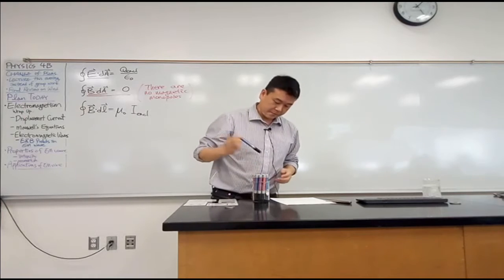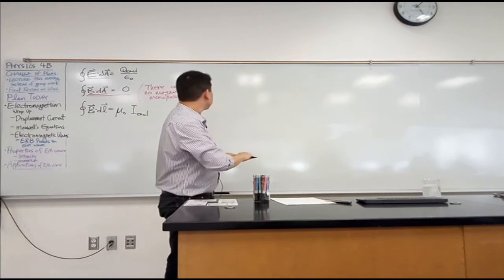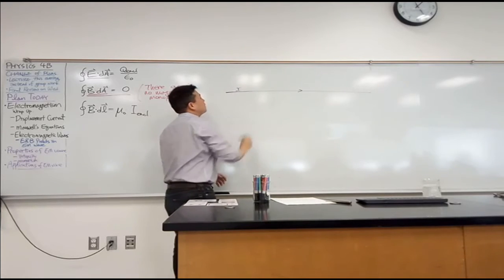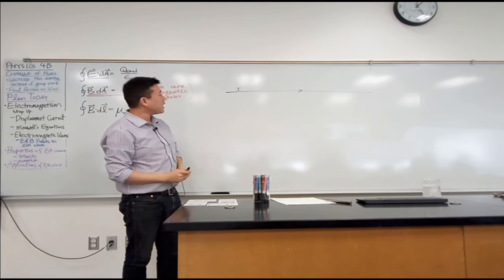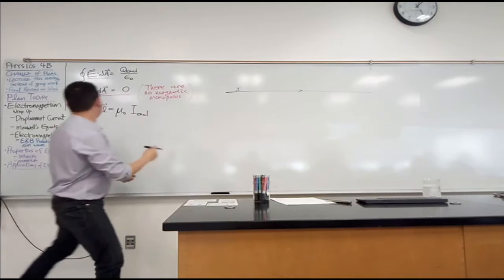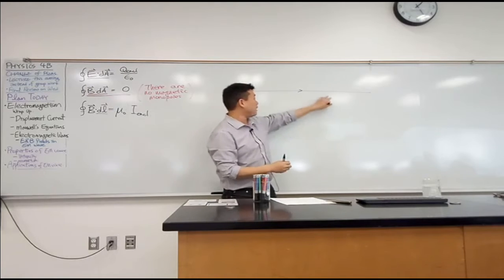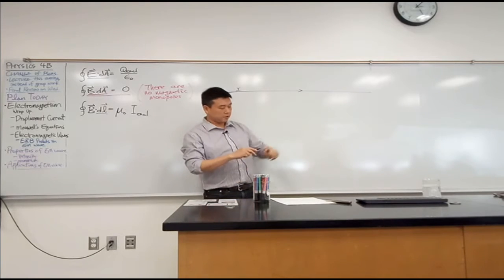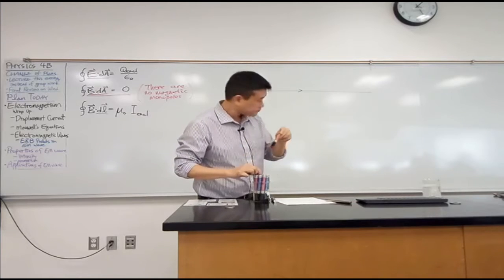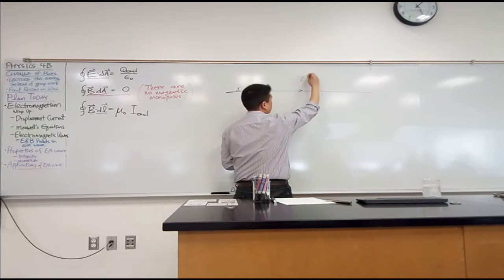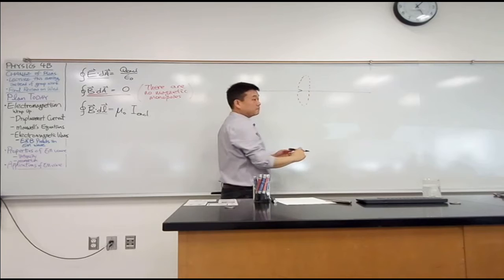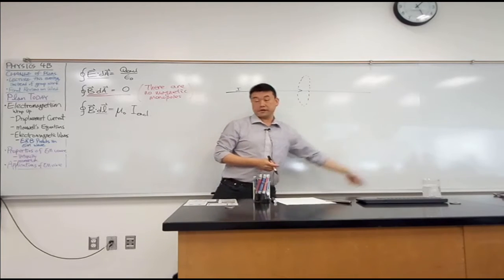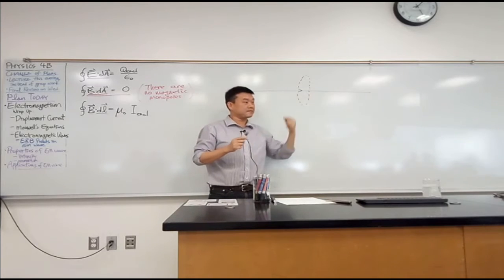Let me draw an example. Suppose I have a current going from left to right — an infinite long line of current I. How would I choose a loop that forms the basis of this integral and somehow encloses this current? You'd circle around it, so the Amperian loop would look like a circle around the wire. But in what sense does this loop enclose this long line of current? It doesn't enclose it in the traditional sense.